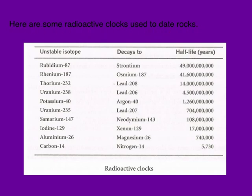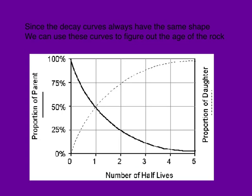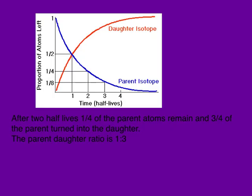Here are some radioactive clocks that can be used to measure and date rocks. As you can see, for most of these the half-lives are very long indeed, except for carbon-14. Carbon-14 is going to be used to date things that were once alive. Since the decay curves are almost always the same shape, we can use these curves in order to figure out the age of a rock, seeing the relationship between what happens to the parent isotope and what happens to the daughter isotope.